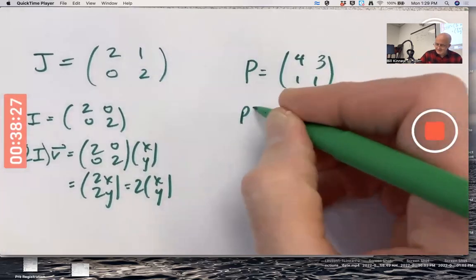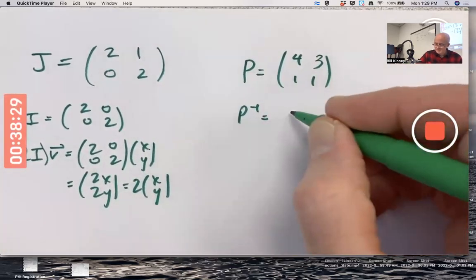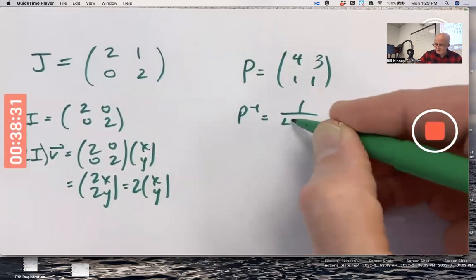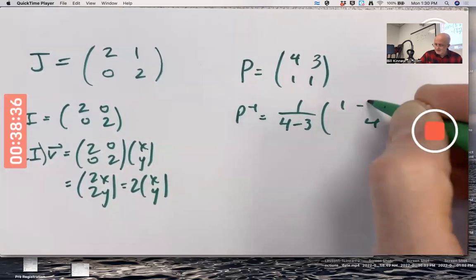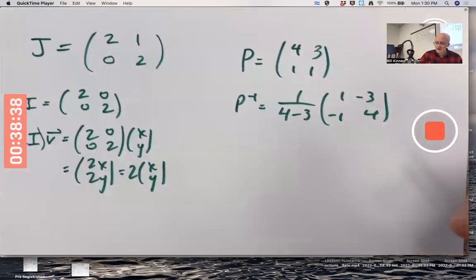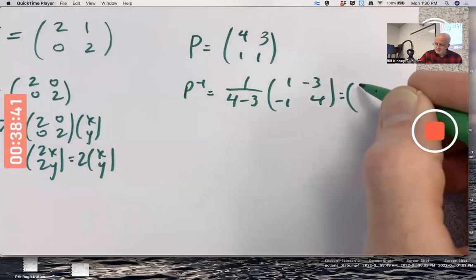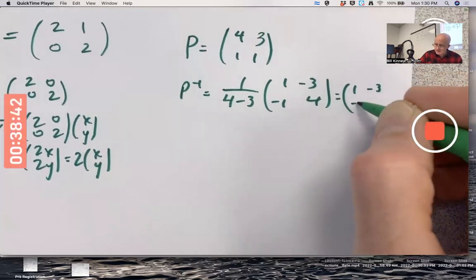So its inverse is easy to find. P inverse, one over the determinant, which is going to be one. Swap the numbers in the main diagonal. Negate the numbers on the off diagonal. There's P inverse. One, negative three, negative one, four.